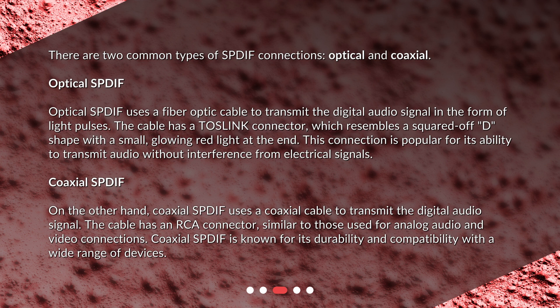Coaxial SPDIF, on the other hand, uses a coaxial cable to transmit the digital audio signal. The cable has an RCA connector, similar to those used for analog audio and video connections. Coaxial SPDIF is known for its durability and compatibility with a wide range of devices.